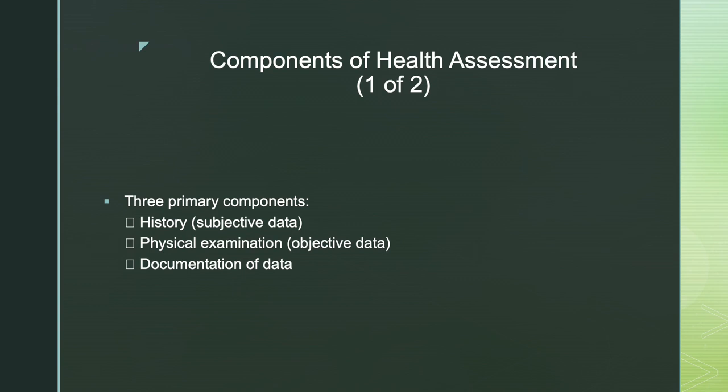Objective data is hard evidence: a creatinine of 2.26, or a patient is 76 years old, or they weigh 98.6 kilograms. These are documented data from medical equipment that has been patented, approved, put out on the market and sold. This information has a very low risk of being fake. So get objective data and subjective data correctly in your brain — we're going to continue to talk about them.